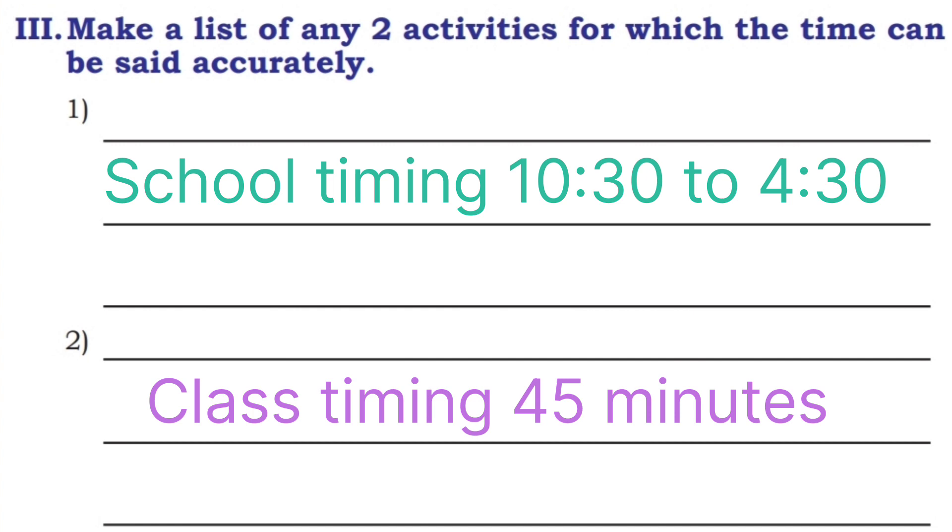Class timing is 45 minutes. For one period to another period, 45 minutes only. It doesn't change. So you can accurately tell the time. This is exercise 14.3. See you in the next exercise. Thank you.